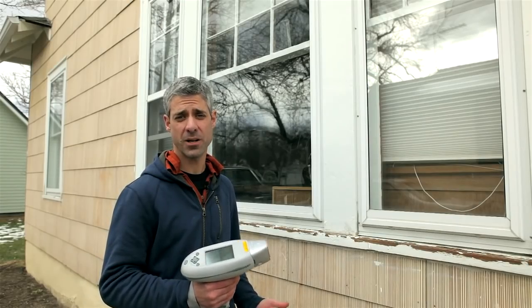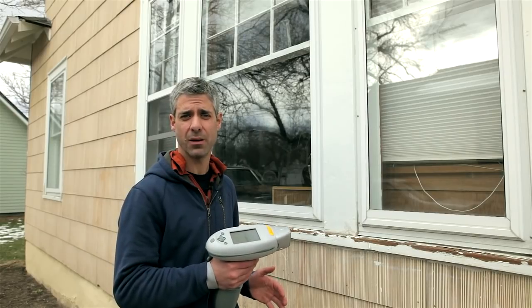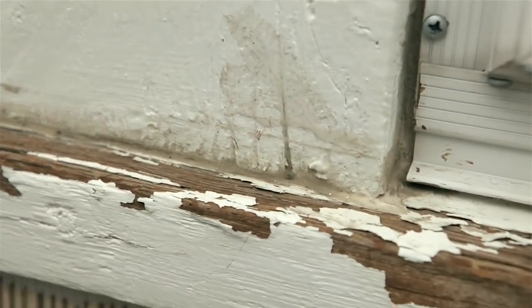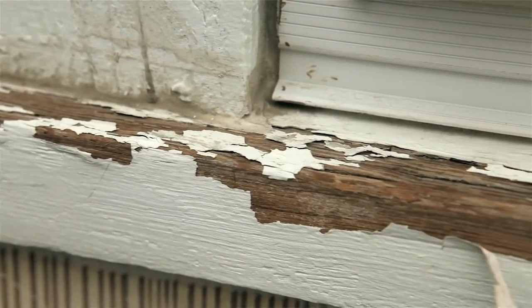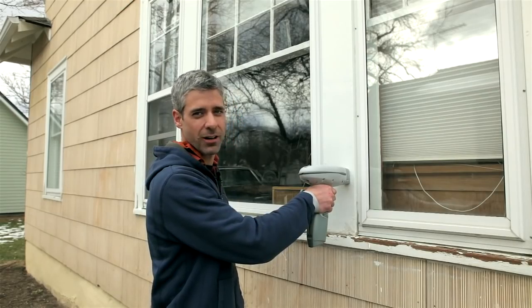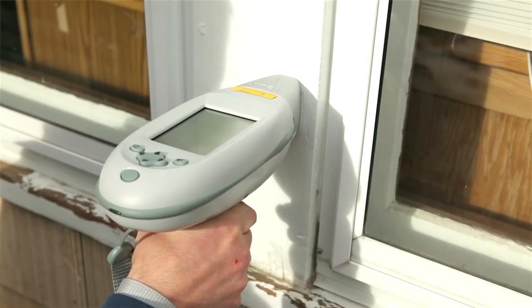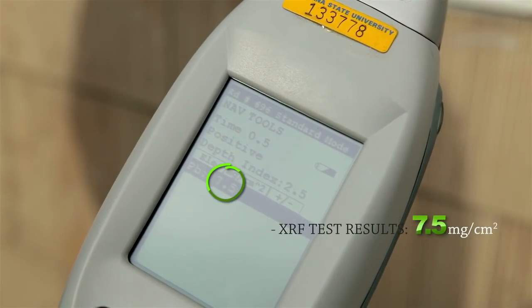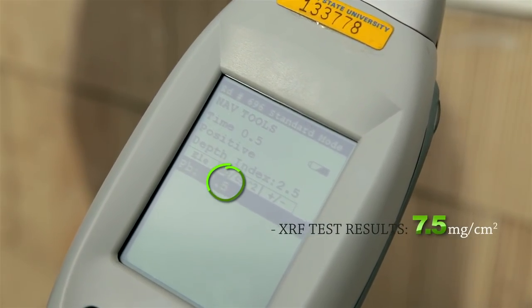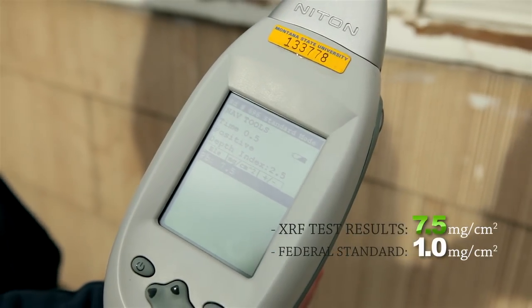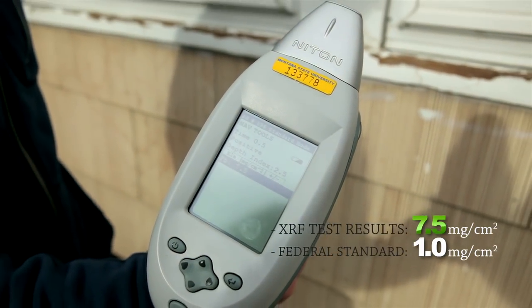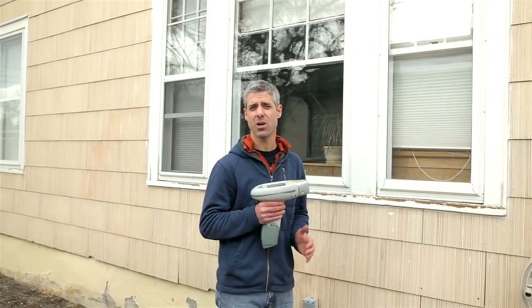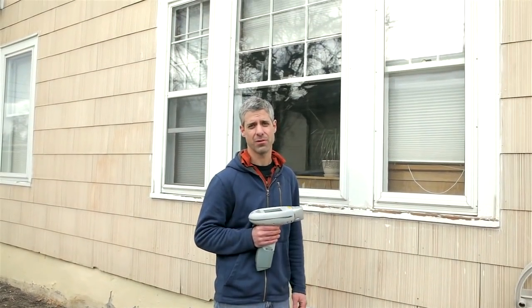Without getting into too much detail, an XRF contains a radioactive element that allows you to detect exactly how much lead is in the surface you're testing. It's as simple as holding it up against that surface, pulling the trigger, and reading the number off the gun. That 7.5 is in milligrams per square centimeter, and the federal standard is 1.0. This is such a nice test because it's the only on-site quantitative test we have available for lead-based paint.